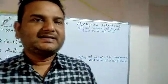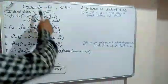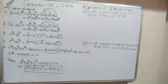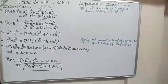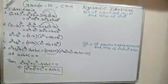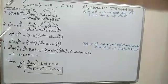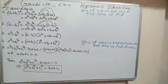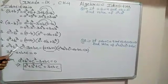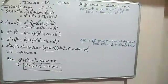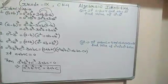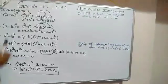Good morning students. Let us start Grade 9 Chapter 4 Algebra Identities. You already know about identities regarding cube: a plus b whole cube, a minus b whole cube, a cube minus b cube, a cube plus b cube, and a cube plus b cube plus c cube minus 3abc. Now let us solve some more questions based on these identities.